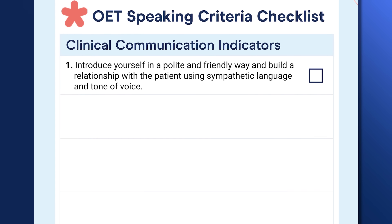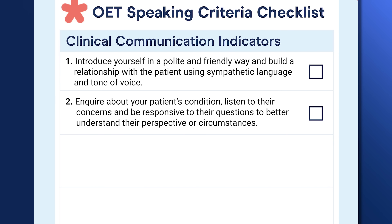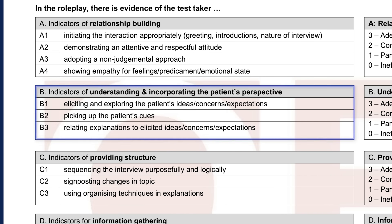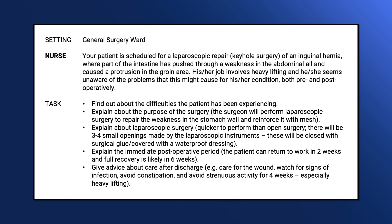The second item in the checklist is: inquire about your patient's condition, listen to their concerns, and be responsive to their questions to better understand their perspective or circumstances. This item also comes from the clinical communication criteria. The indicators for understanding and incorporating the patient's perspective refer to how well you listen and respond to your patient. This checklist item also relates to the instructions found on the roleplay card — specifically the first prompt, which asks you to find out about the difficulties the patient has been experiencing. This is a typical first instruction for an OET speaking roleplay card.